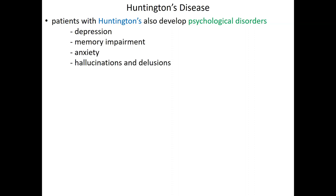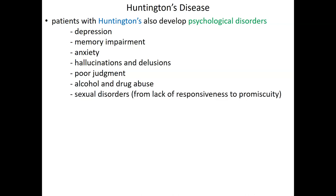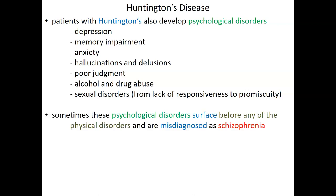Patients with Huntington's disease also develop psychological disorders, including depression, memory impairment, high levels of anxiety, hallucinations, delusions, poor judgment, substance abuse, and sexual disorders ranging from a complete lack of responsiveness to uncharacteristic promiscuity. It's quite common for these psychological disorders to surface before the motor disorders. It's not uncommon for someone with early-stage Huntington's to be initially diagnosed with schizophrenia because the psychological manifestations arise before the physical ones.